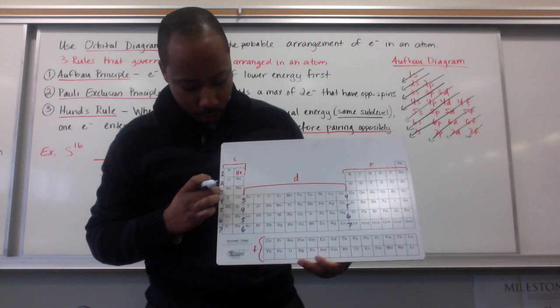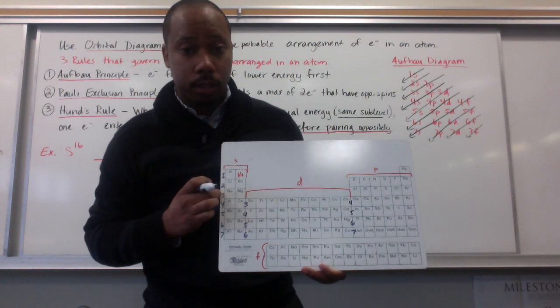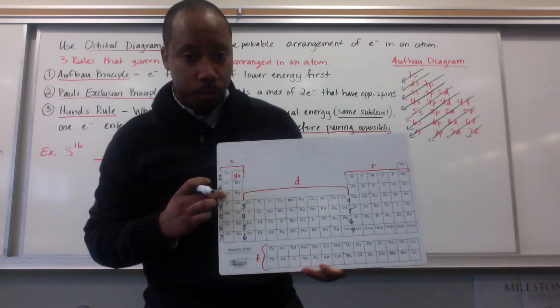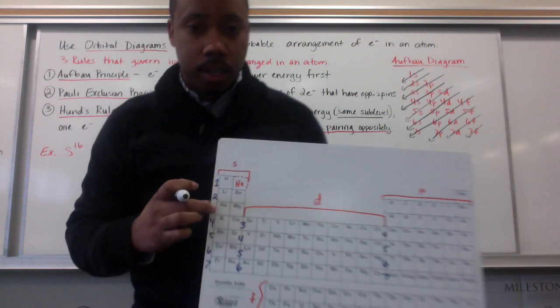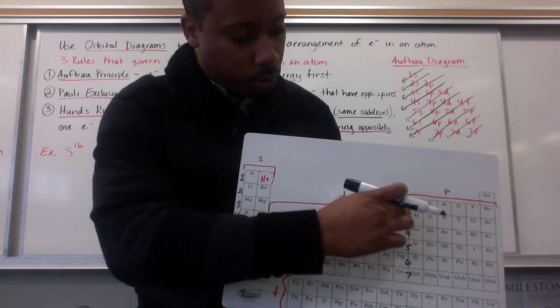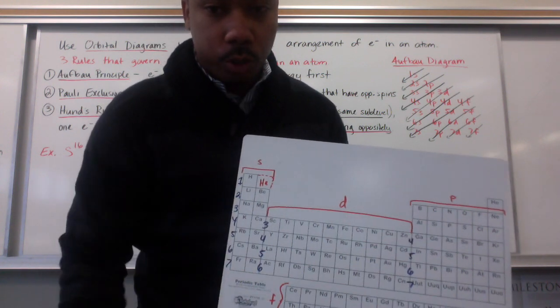And then down to the bottom, like left to right. I go to 3s, go through both of my 3s atoms here, and then across to aluminum, all the way to sulfur.